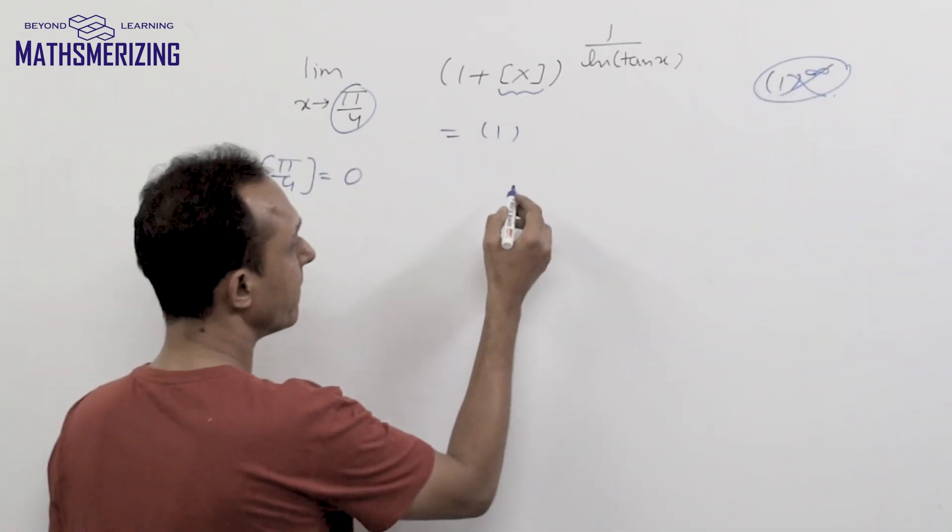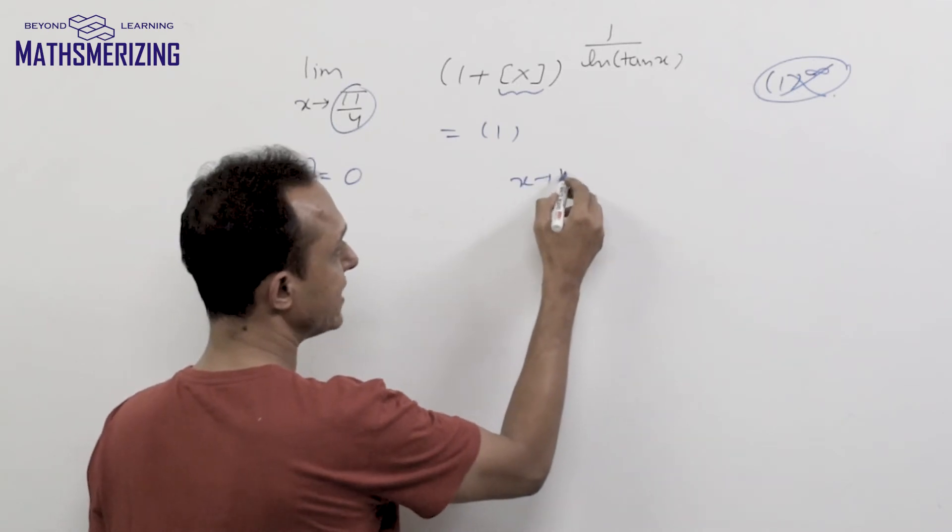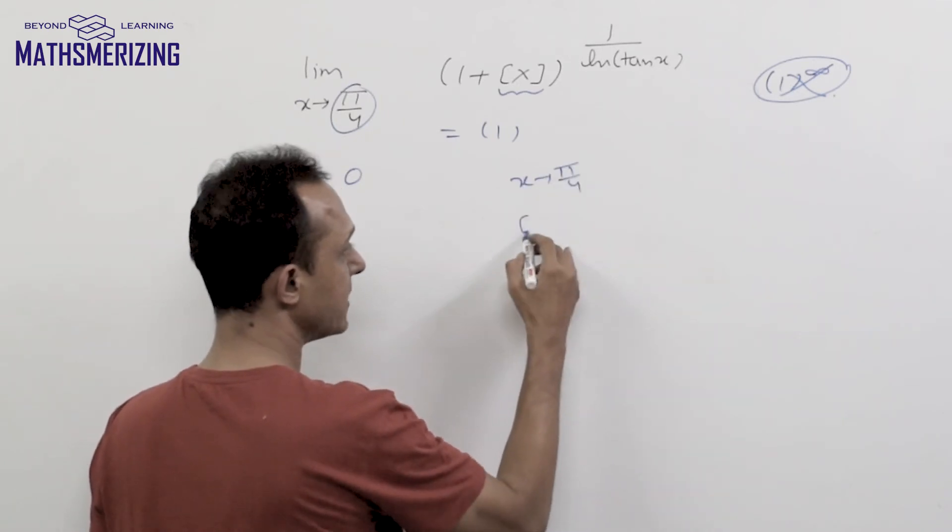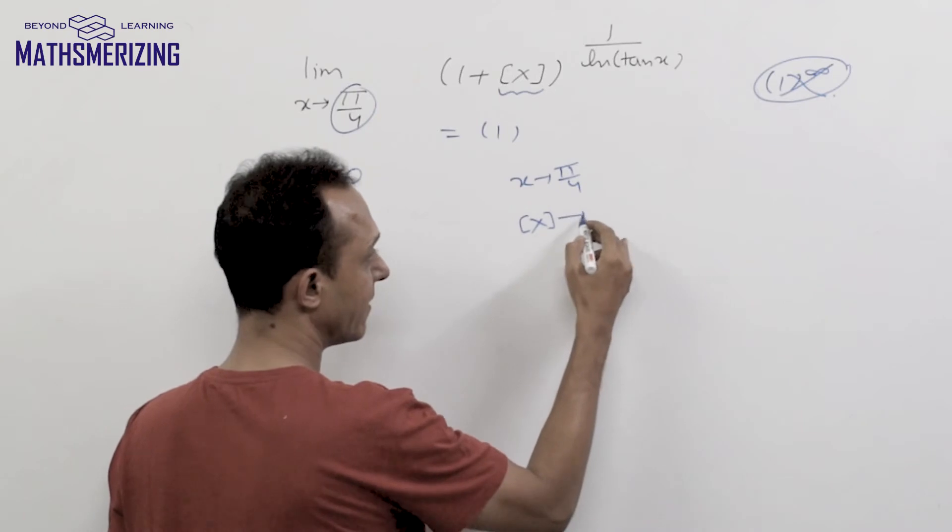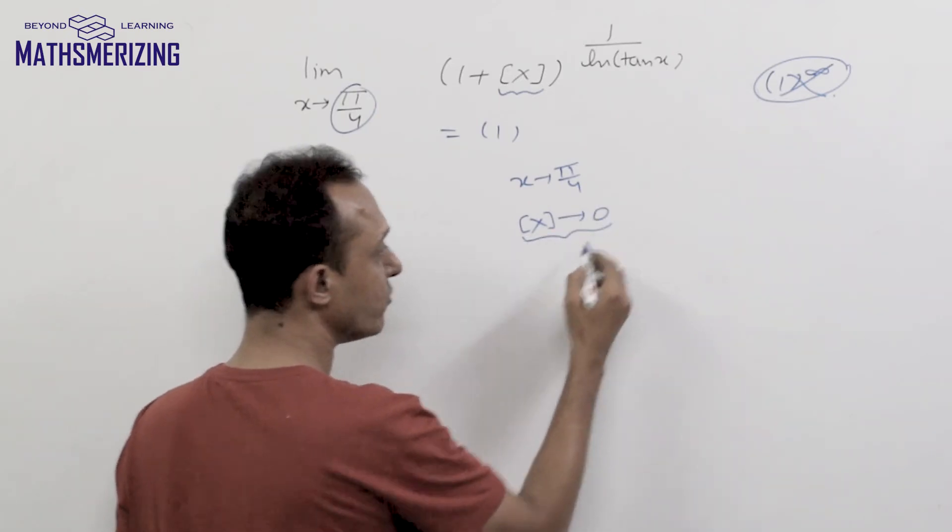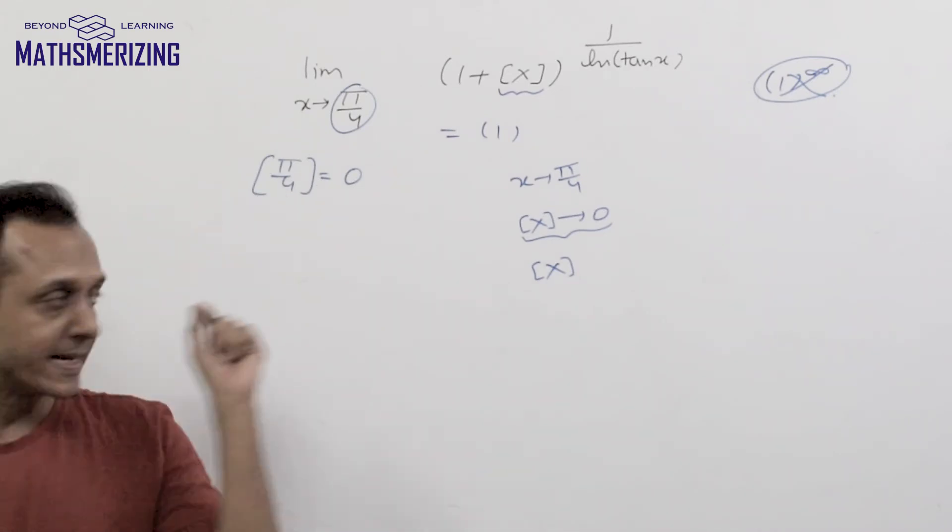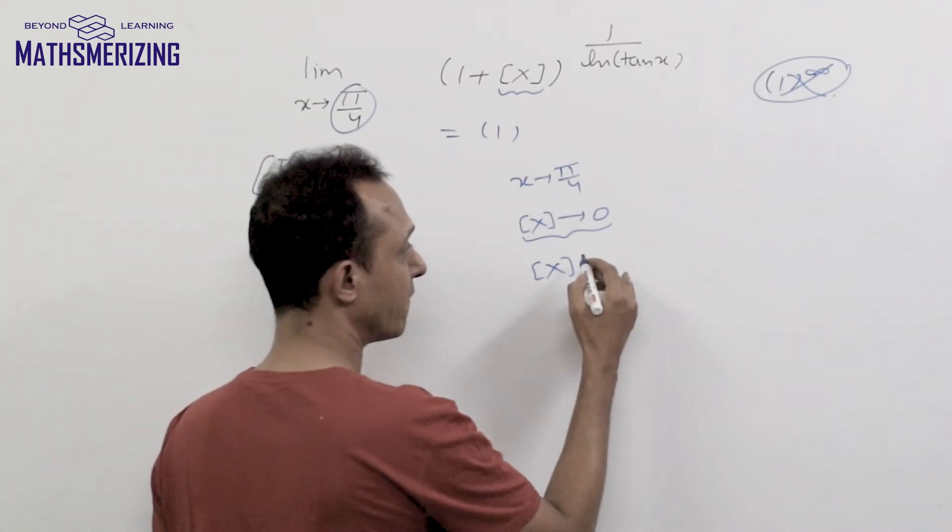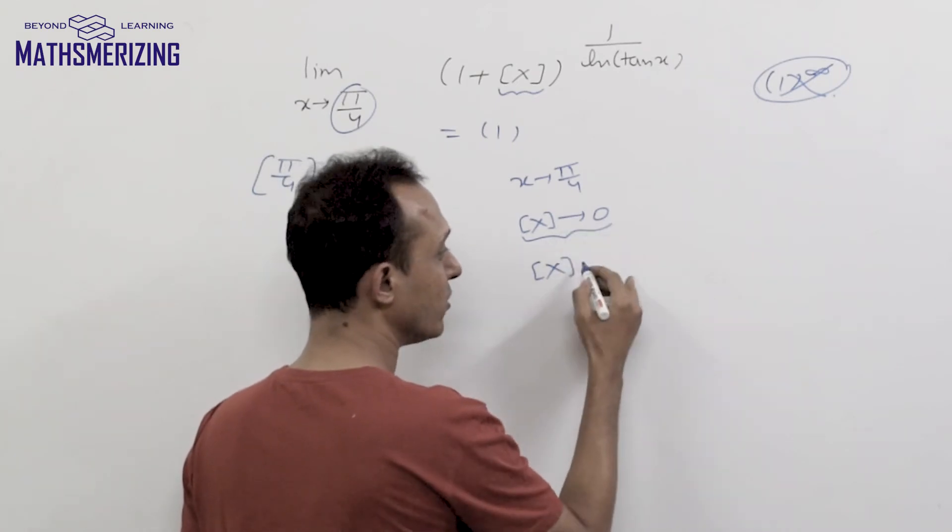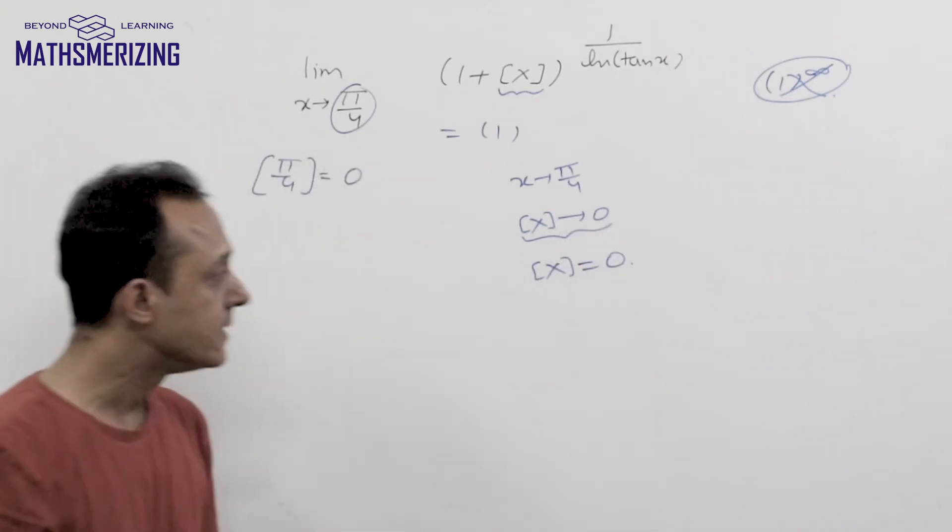The problem being that when x tends to pi by 4, this greatest integer function of x doesn't tend to 0. Greatest integer function doesn't take a limiting value, it always takes an exact value. So greatest integer function of x cannot tend to 0, it can only be 0.